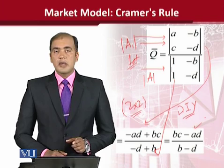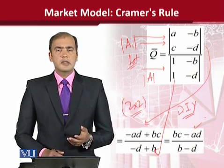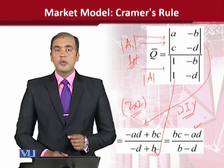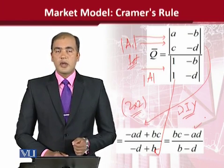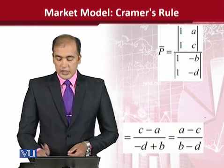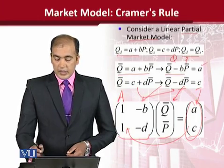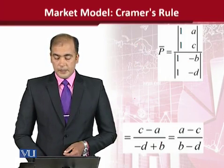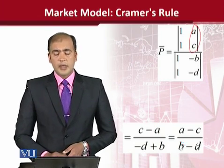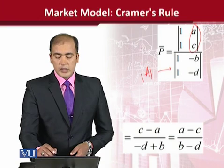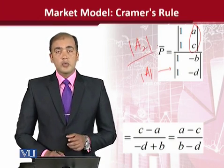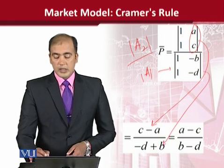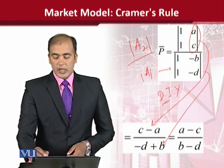Now we shall talk about the next variable, which is P* or P-bar — it is just a notational difference. For this, we replace the second column of the coefficient matrix with the constant matrix. So if we go back and look: A and C replace the second column. You can see that the second column is now replaced, and we have the original determinant A. We divide determinant of A2 by determinant of A. It is very easy to solve this numerator and denominator — again a small exercise for you — and the answer would be equal to this.